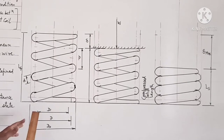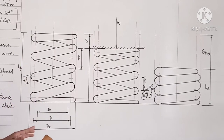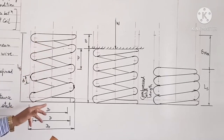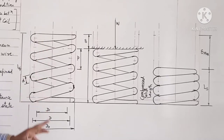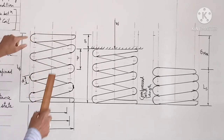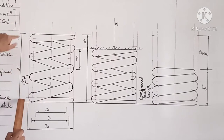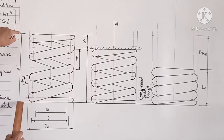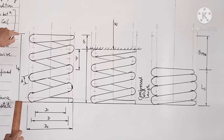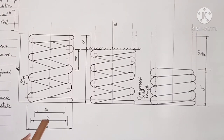Now what is free length? The axial length of the compression spring in unloaded condition — here load is not applied. This length is known as free length. It is the maximum length in unloaded condition.